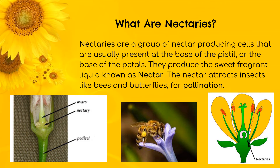Let's look at nectaries. Nectaries are a group of nectar-producing cells that are usually present at the base of the pistil or the base of the petals. They produce the sweet fragrant liquid known as nectar. The nectar attracts insects like bees and butterflies for pollination. In this flower, we can see that the nectary is present right below the ovaries and above the pedestal.